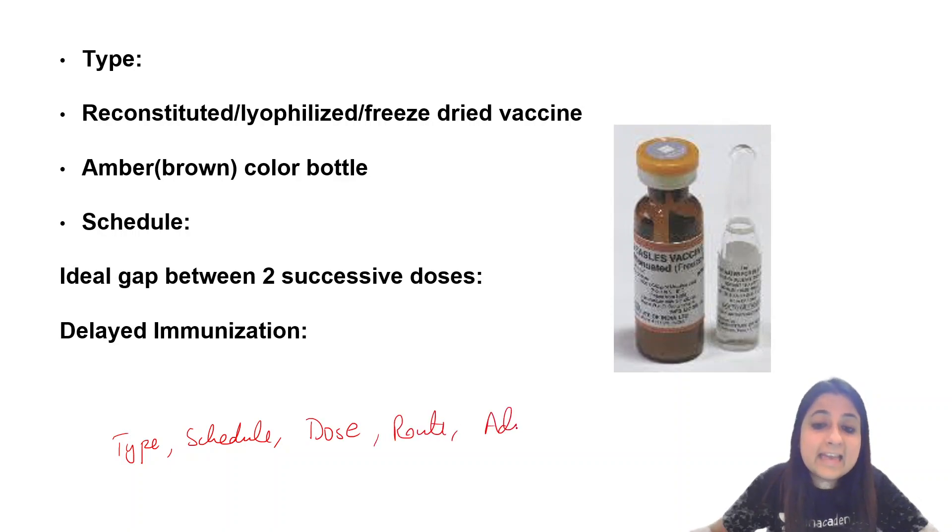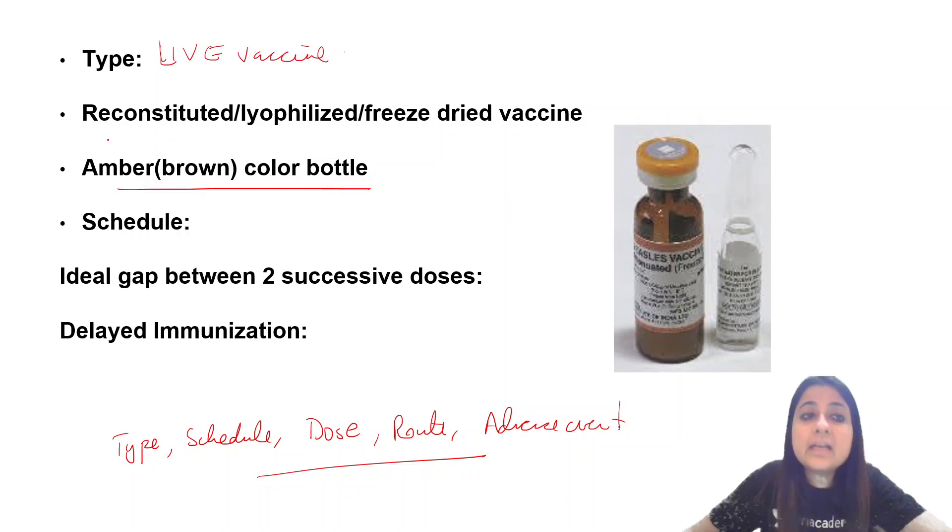All these things are a must, plus some special points about the vaccine. First, look at the color. This measles vaccine comes in an amber brown colored bottle. It's written as live attenuated freeze-dried vaccine. The type is a live vaccine, also known as reconstituted, lyophilized, or freeze-dried vaccine.